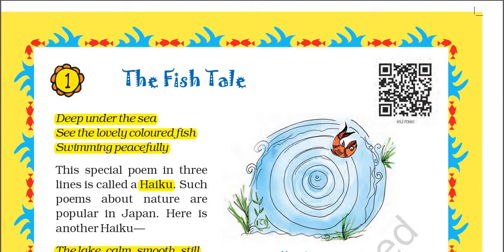So what are these three lines? These three lines are a poem known as haiku. Such poems about nature are popular in Japan.